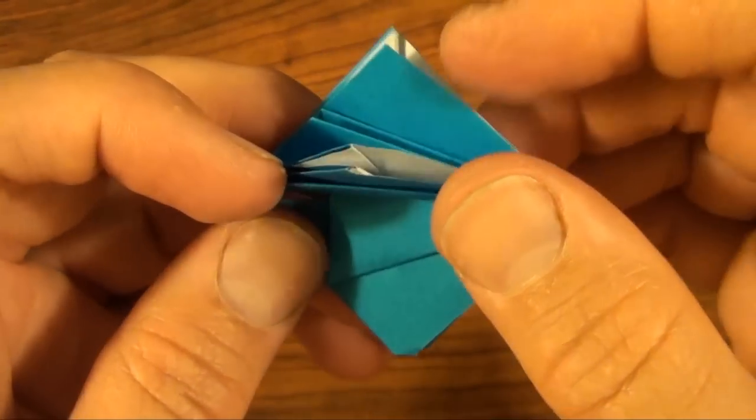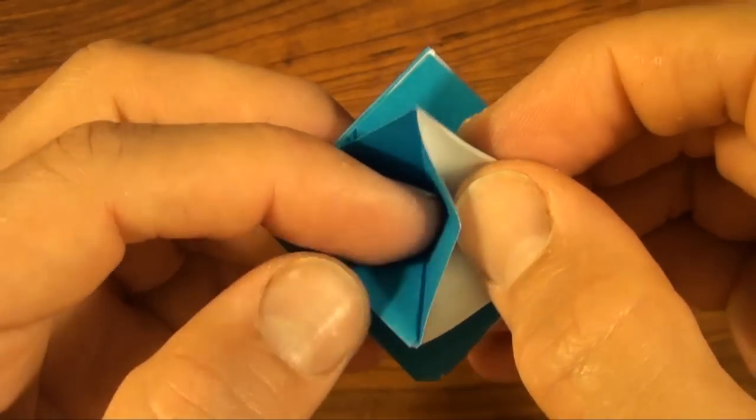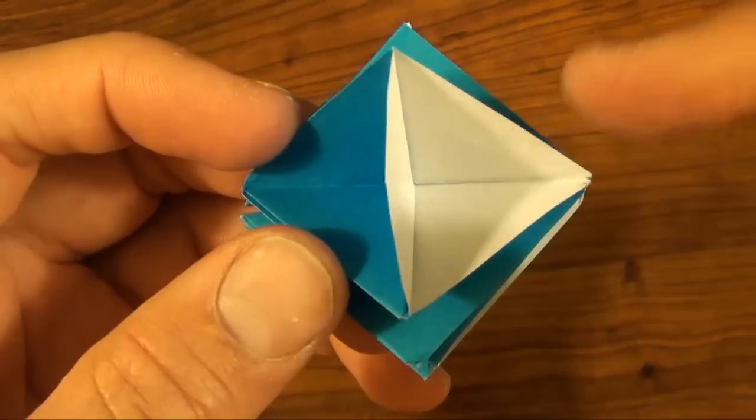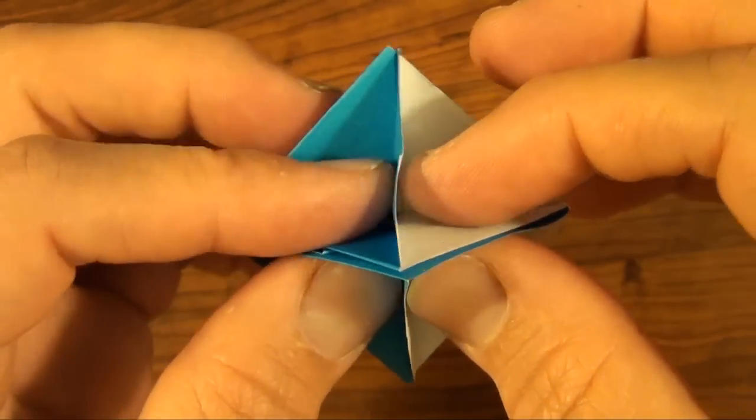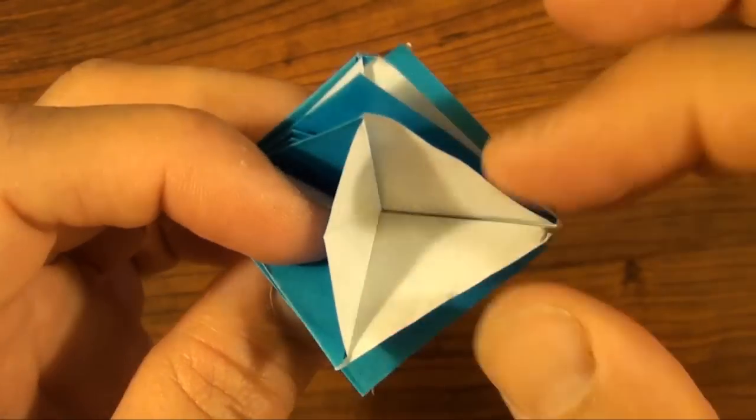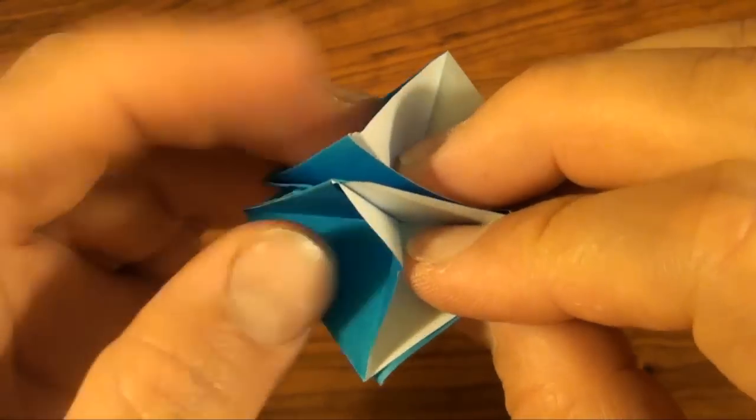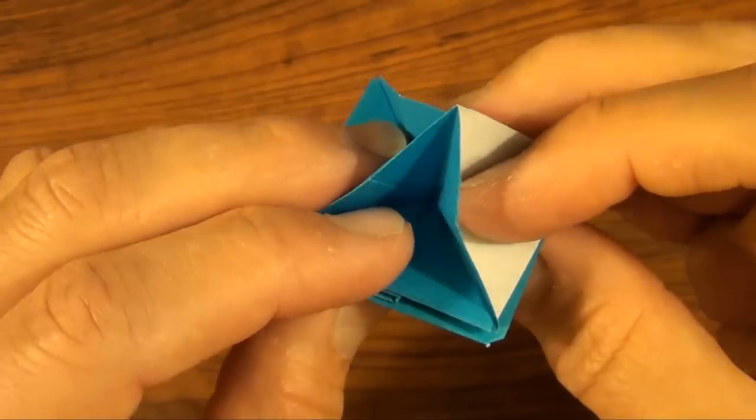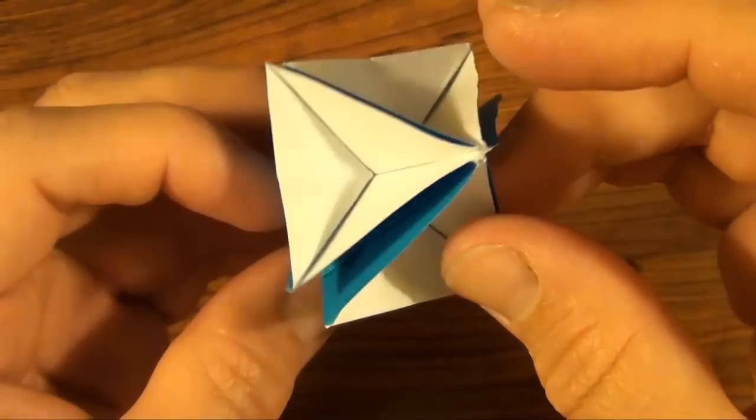You see where there's white there? We're going to open up. Separate that layer. And you see these triangle shapes here. Do that on all of the white areas. Open them up. If you do this right, you'll end up with the skeleton of an octahedron. And guess what? We are done.